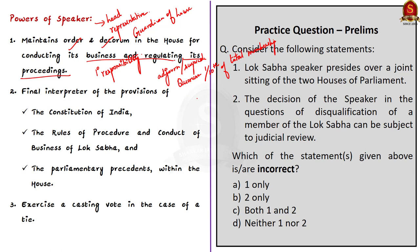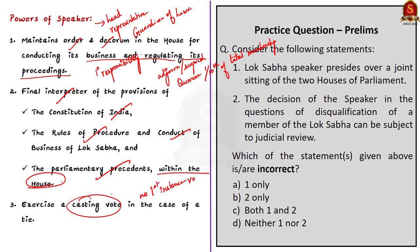The Speaker has the power to maintain order and decorum in the House. He is also the final interpreter of the provisions of the Constitution of India, rules of procedure, conduct of business of Lok Sabha and parliamentary precedents within the House. Regarding voting, the Speaker does not vote in the first instance — he can only exercise a casting vote in case of a tie. Such a casting vote is used to resolve a deadlock when the House is divided equally on any question.